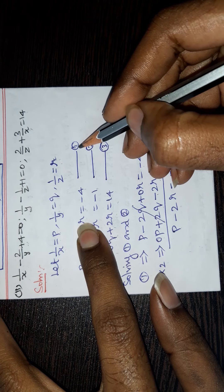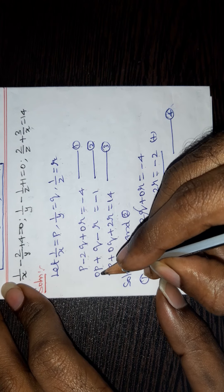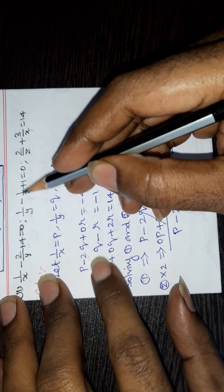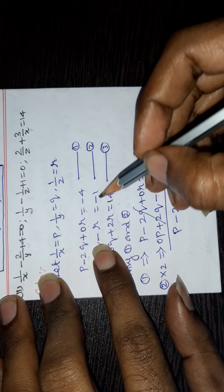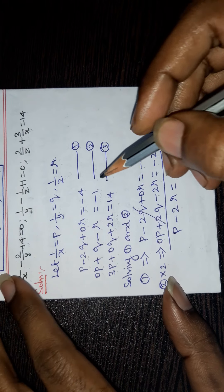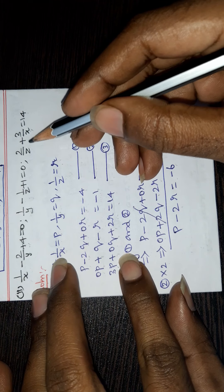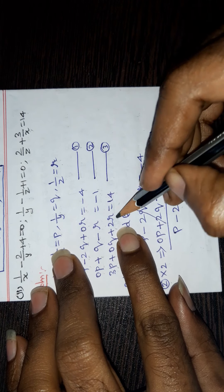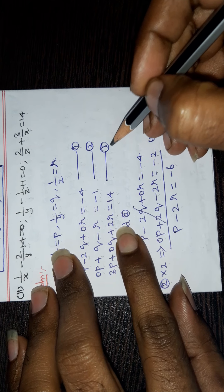This is equation 1. Next, x is not here, so 0p plus q minus r equal to minus 1. This is equation 2. Next, 3p — y is not here, so 0q — plus 2r equal to 14. This is equation 3.